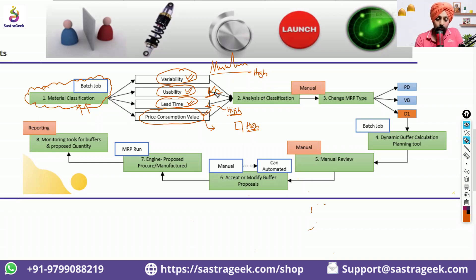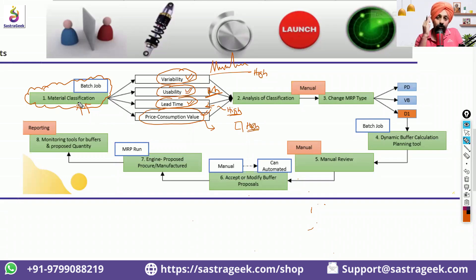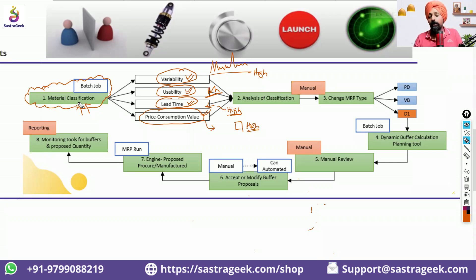When everything is high, it means we should not plan as normal planning — we need to plan as DDMRP. The material classification application runs based on a batch job and classifies materials as high, medium, or low across variability, usability, lead time, and price comparison value. Based on these four parameters, the business can decide whether to go with PD, VB, or D1.